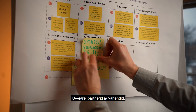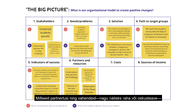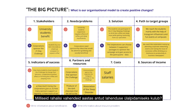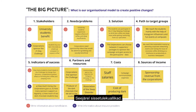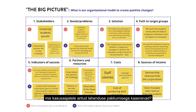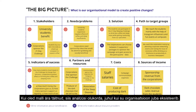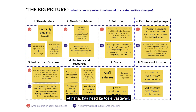Then partners and resources: which partnerships and resources — like finances and know-how — do you need to offer your solution to the beneficiaries? Then the costs: what are the finances needed to sustain the annual implementation of the solution? And then sources of income: how much money do you need to cover the costs of offering the solution to the beneficiaries? After filling in the template, analyze the situation if your organization already exists, or start testing your assumptions if you are establishing a new initiative.